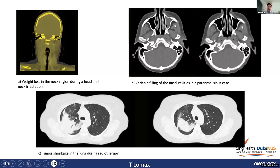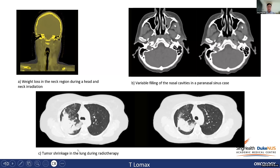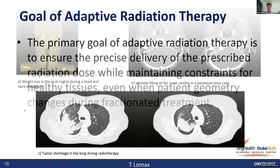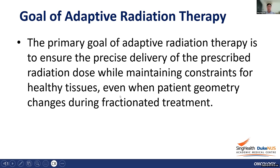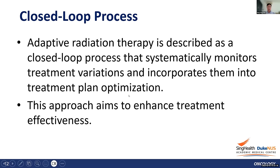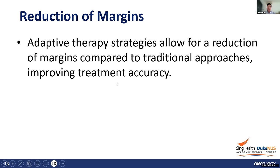Clinical examples include patient weight loss in the neck region during head and neck irradiation, variable filling of the nasal cavity, and tumor shrinkage in the lung during radiotherapy — all affecting proton beam range and isodose distribution. The primary goal of adaptive radiation therapy is to ensure the precise delivery of prescribed radiation dose while maintaining constraints for healthy tissue. ART is a closed-loop process that systematically monitors treatment variations and incorporates them into treatment plan optimization, aiming to enhance treatment effectiveness.